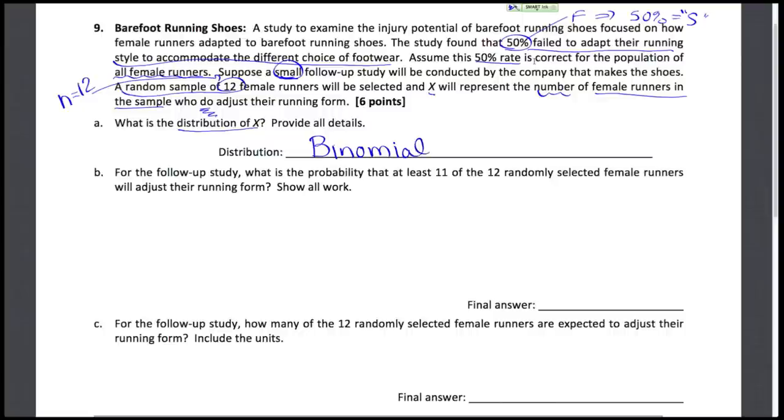Now binomial is the family of distributions and each binomial distribution is indexed with the particular sample size and the particular success probability. So we want to make sure we include the n, which happens to be 12 here, and p represents the probability of success, successfully adapting, which happens to be 50%. We need the word binomial, we need to specify the actual sample size n of 12, and the probability p of 0.50 for indexing a particular binomial distribution.